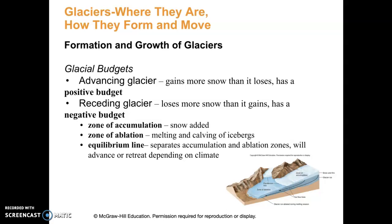The zone of accumulation is where snow is added. The zone of ablation is where we have the melting and calving of icebergs — where we're losing the glacier. The equilibrium line separates the accumulation and ablation zones, and will advance or retreat depending on the climate.